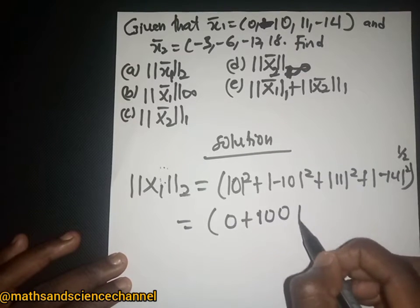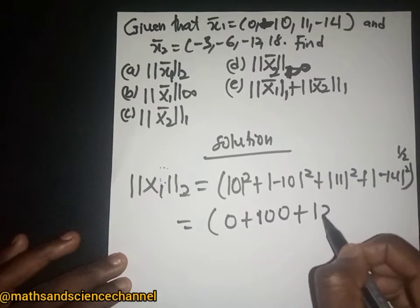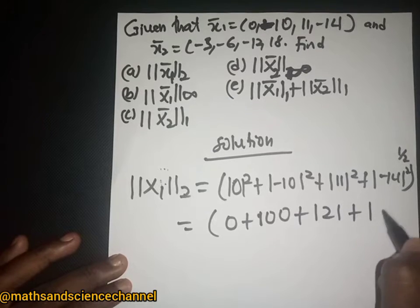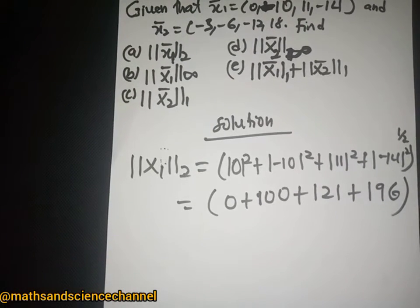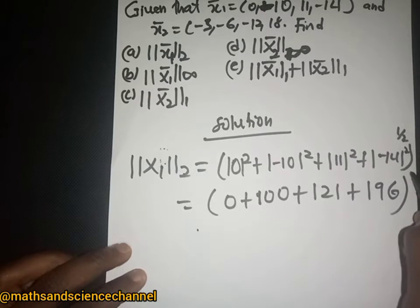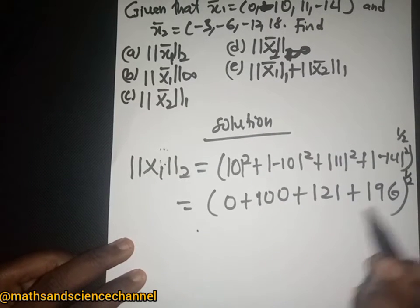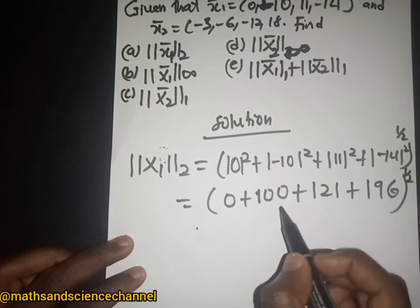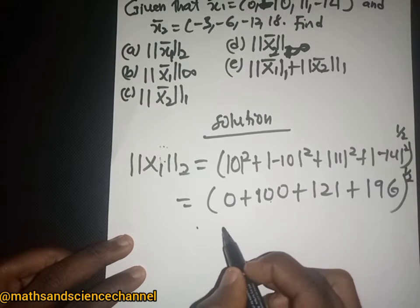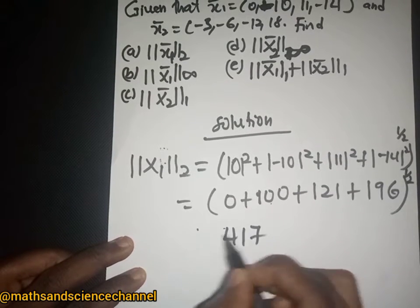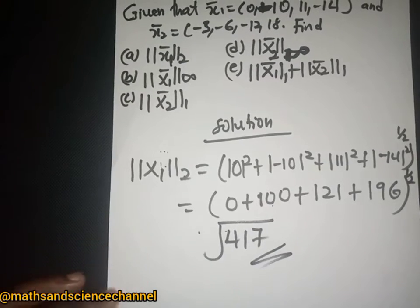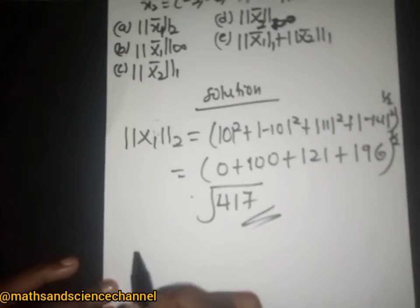10 squared is 100, then we have 11 squared which is 121, and also 14 squared which is 196. Summing all of these to the power of one half gives us 417 under the square root, so the 2-norm of x1 is √417.